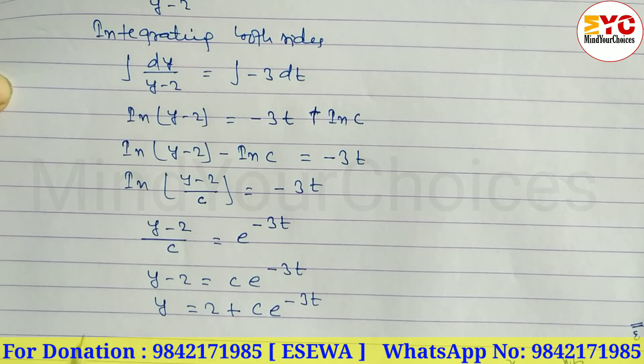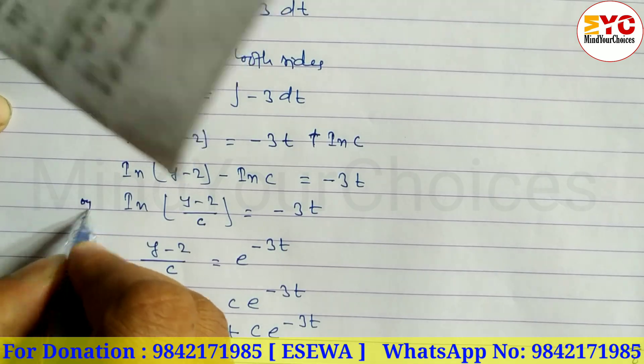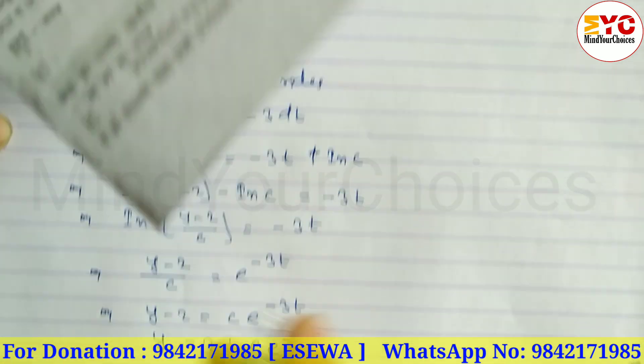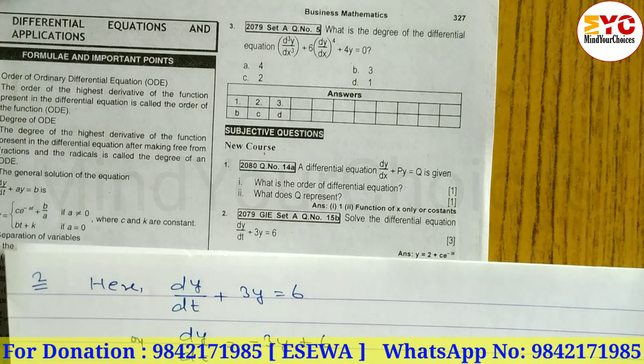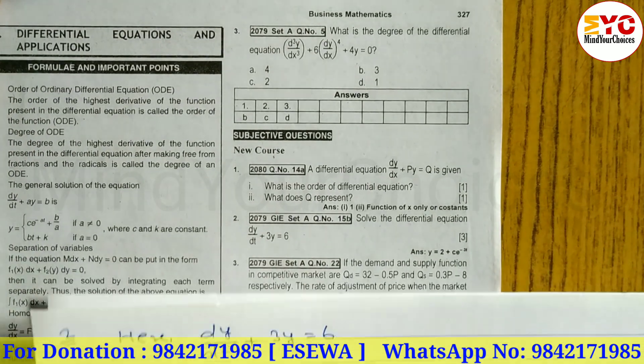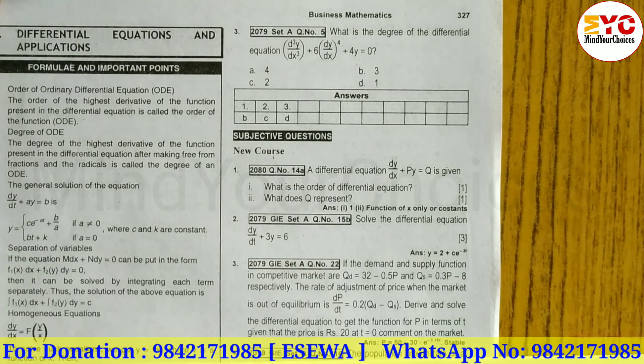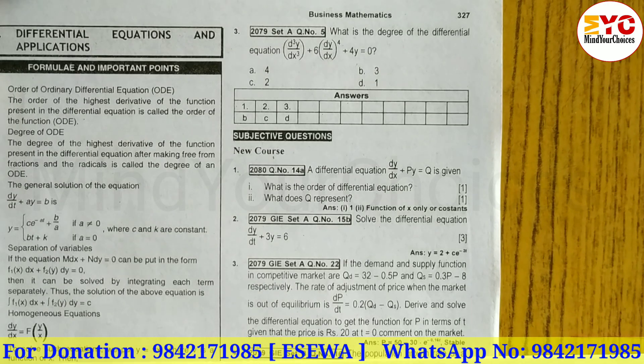The solution of the differential equation is y = 2 + c·e^(-3t). Hope you understand this question from differential equation and its application, video one part one. Please like, subscribe, and share with your friends. Thanks for watching till last. Keep supporting and keep sharing.